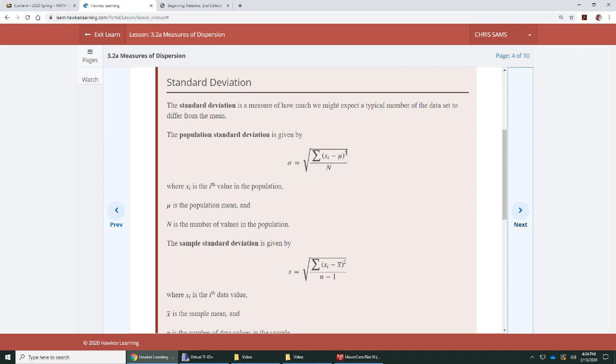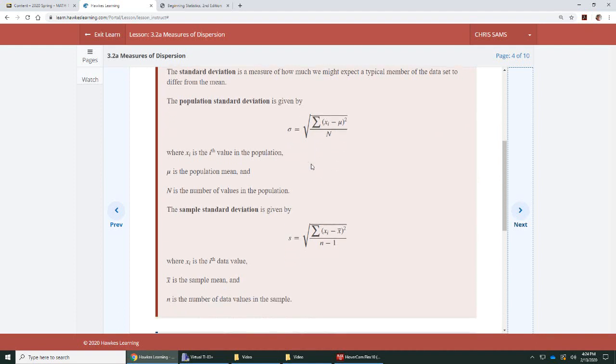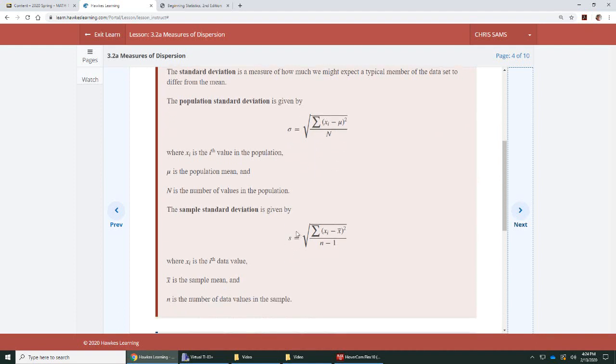It's taking each value, subtracting the mean, squaring that, adding all of those different terms up, dividing by n, the population. This is population standard deviation. This is sample standard deviation. Both calculations are very similar.